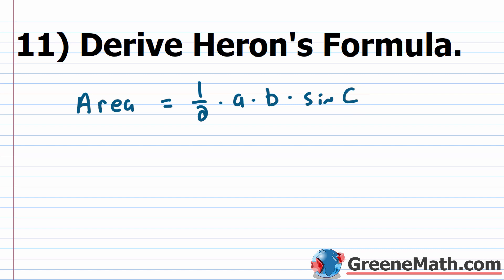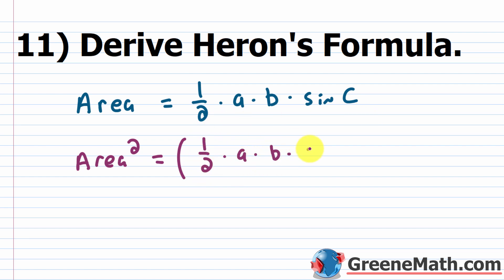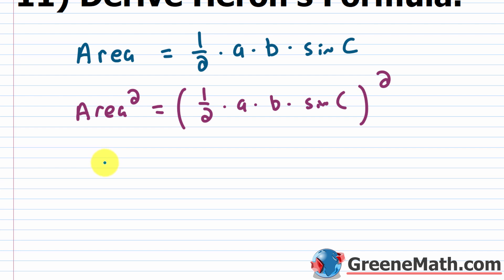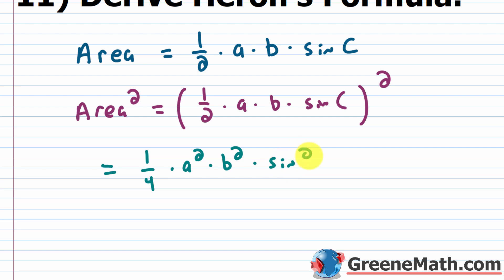What we'll do here is start by squaring both sides. So area squared equals one half times A times B times sine of C, all squared. This exponent of 2 needs to be applied to each factor inside the parentheses. So this gives us one fourth — since one half squared is one fourth — times A squared times B squared times sine squared C.